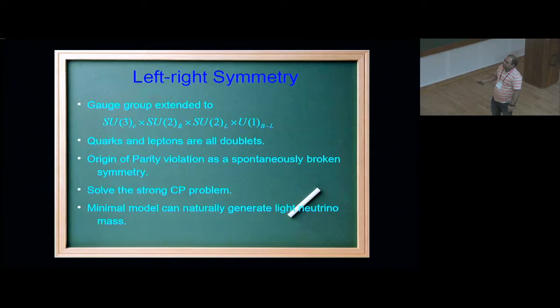Left-right symmetric models are very well motivated and popular these days. They basically extend the gauge groups of the standard model with SU3 color cross SU2R cross SU2L cross U1B-L. So instead of U1Y, you have this SU2R cross U1B-L, which at some scale breaks into U1Y to give you the standard model.